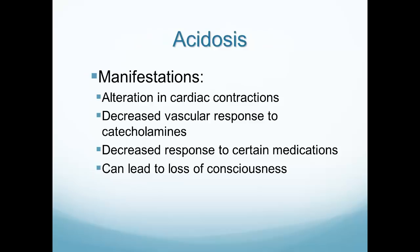Acidosis creates a number of problems and manifestations throughout the patient's body. Since acidosis is in the blood, it's consistent throughout the entire body. It causes alteration in cardiac contractions — the heart can't pump well when pH is outside the normal range. There's a decrease in vascular response to catecholamines, meaning the patient won't respond properly in a fight-or-flight situation. There's a decreased response to certain medications, and research shows normalizing pH improves medication response. Acidosis can also lead to loss of consciousness.